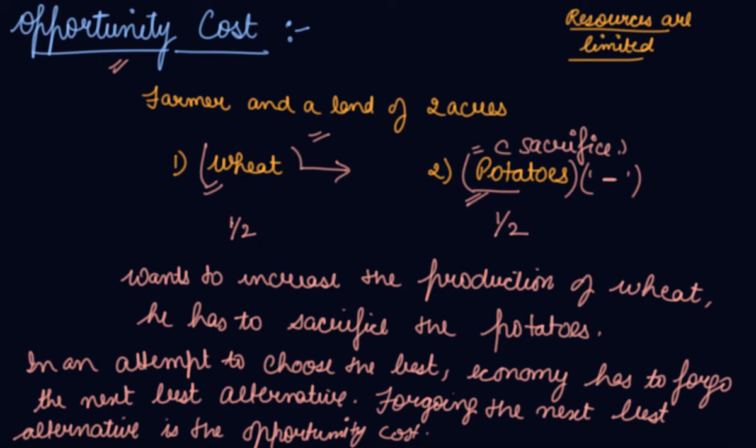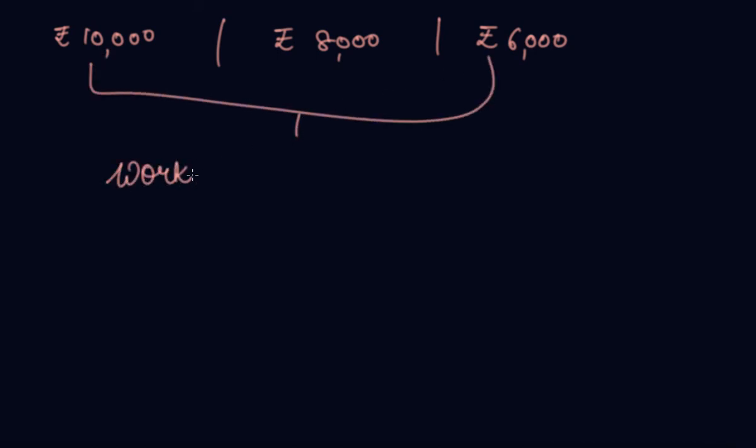We can take another example as well. There is an individual who is searching for a job. He is getting rupees 10,000 in one place, rupees 8,000 at another place, and rupees 6,000 at another place. And the working conditions are same.